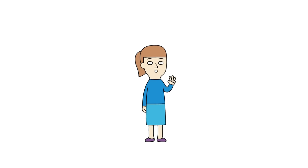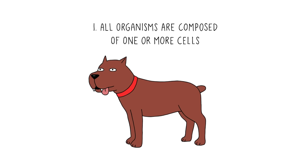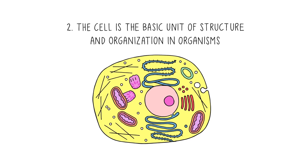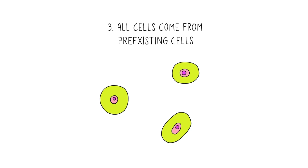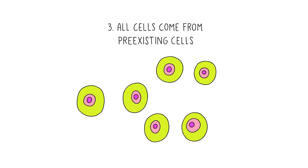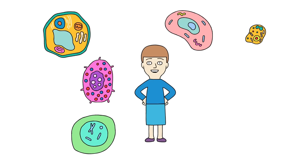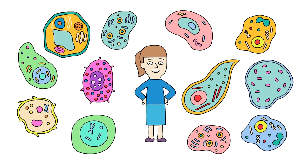There are three parts to the cell theory. One, all organisms are composed of one or more cells. Two, the cell is the basic unit of structure and organization in organisms. And three, all cells come from pre-existing cells. To be honest, this all sounds incredibly boring, until you dig a little deeper into how the world of microscopic organisms and this theory came to be.